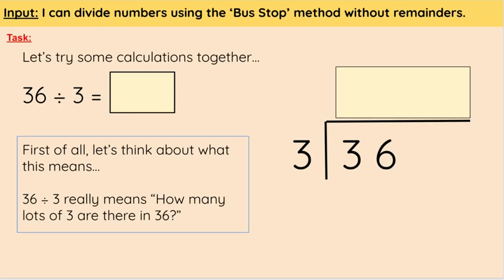Hi everyone, today we're going to be dividing numbers using the bus stop method. First of all, let's look at our calculation. We have 36 divided by 3. Now what does that really mean? Well, it means we want to find how many lots of 3 are in 36.